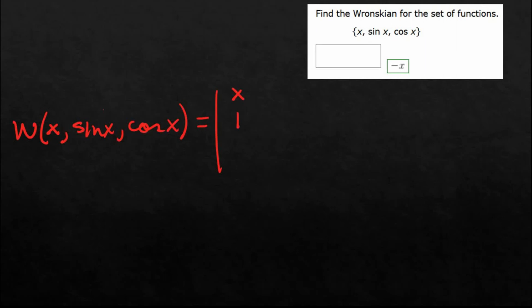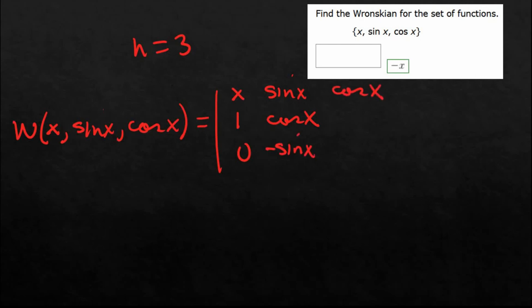We have x — take its first derivative, we get one; second derivative, we get zero. Remember, here we have three functions, so we're going to be taking two derivatives. Then sine x — take its derivative, cosine. Be careful about those derivatives of cosine and sine, and remember where the negative goes. In calculus one, a trick I used: anytime you're taking the derivative of a trig function that starts with a 'c', the result is always negative. Then negative sine, and then negative cosine.